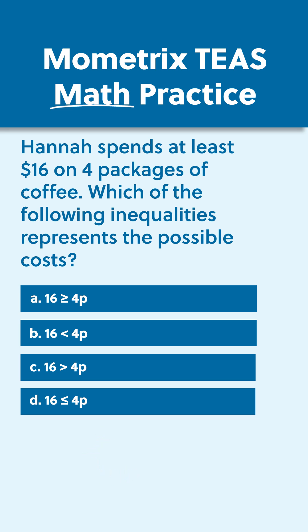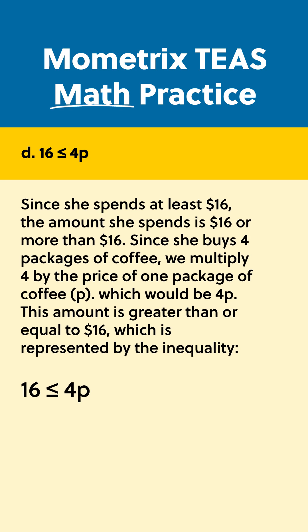The correct answer is D. Since she spends at least $16, the amount she spends is $16 or more than $16. Since she buys four packages of coffee, we multiply four by the price of one package of coffee, P, which would be 4P.